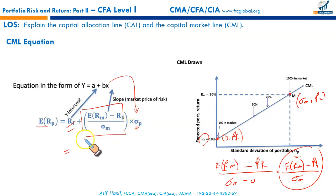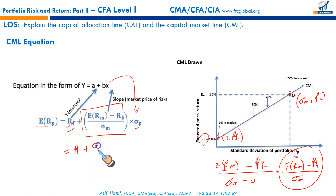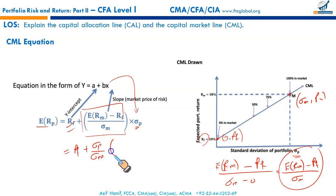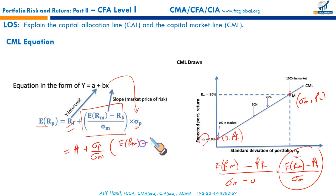So your CML equation can now be written as: RF plus [(ERM minus RF) divided by the standard deviation of the market portfolio] times the standard deviation of the portfolio. This is the capital market line equation.